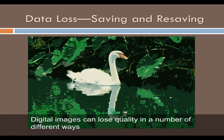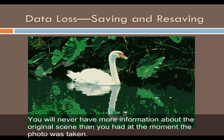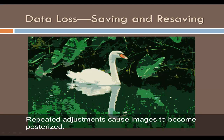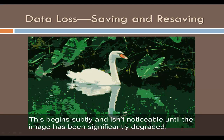Digital images can lose quality in a number of different ways, so it is critical to capture as much of the original digital data as possible in a master file. You will never have more information about the original scene than you had at the moment the photo was taken. Each time a digital image is altered and resaved, you are discarding data. Repeated adjustments cause images to become posterized, meaning that smooth gradations of tone are reduced to a few simple colors. This begins subtly and isn't noticeable until the image has been significantly degraded.